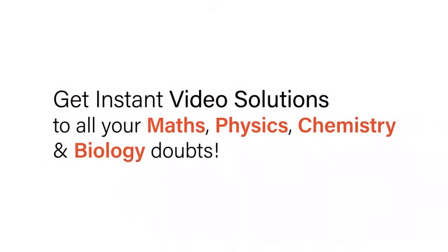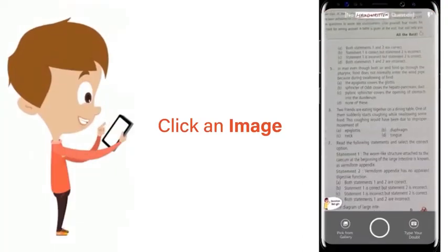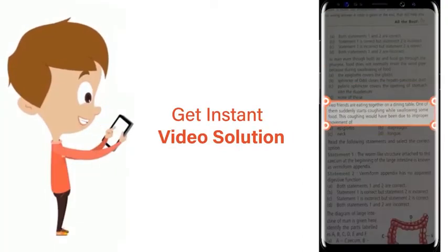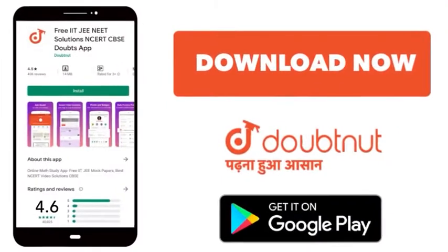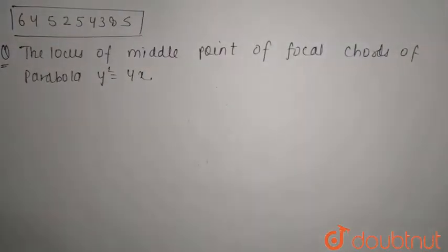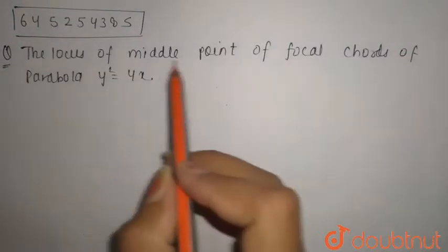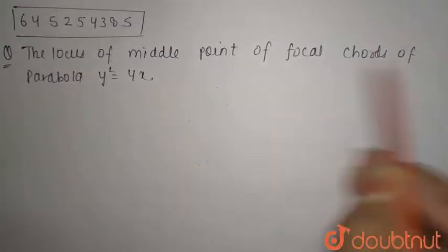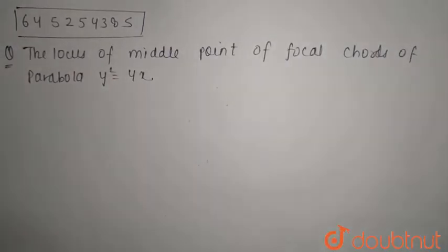With Doubtnet, get instant video solutions to all your maths, physics, chemistry and biology doubts. Just click the image of the question, crop it and get instant video solution. Download Doubtnet app today. Hello students, today's question is: the locus of the middle point of the focal chords of a parabola y² = 4x.